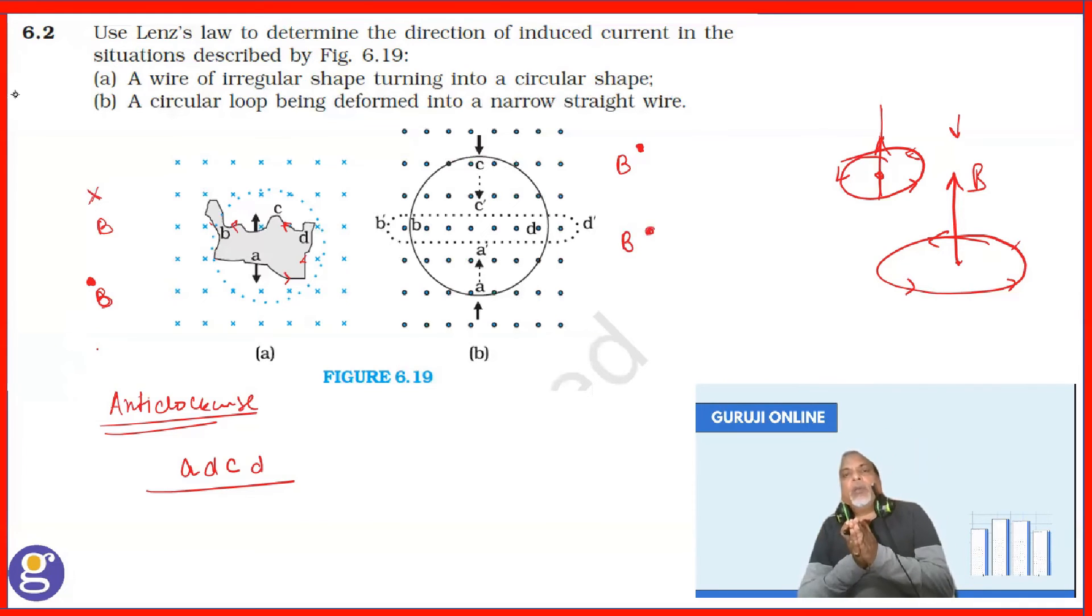Because, as per Lenz's law, it will try to oppose that decrease. I hope this is clear. And when it is trying to oppose that, whatever decrease is happening, it will try to support that or it will try to oppose that.